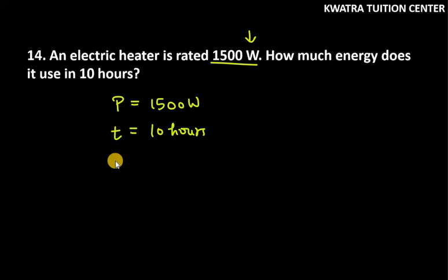Now, we want to find energy. And what is the formula of energy? It is power into time, because energy is dependent on both things: how much power is used and how much time is used.